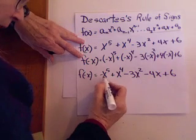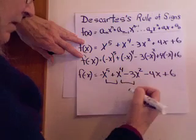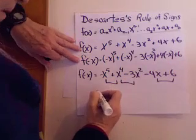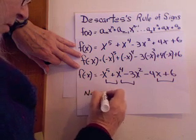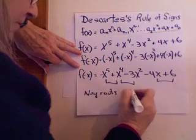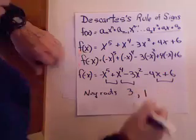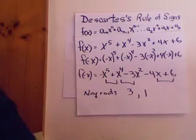Alright, sign changes. Minus to plus. Yep. Plus to minus. Yep. Minus to minus. No. Minus to plus. Yes. So this means there are three sign changes. So for negative roots, I have three or less than that by two, one.